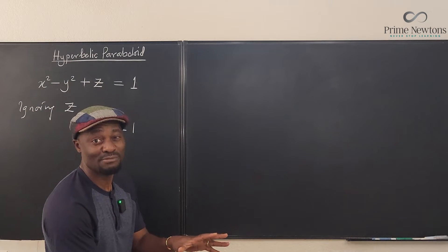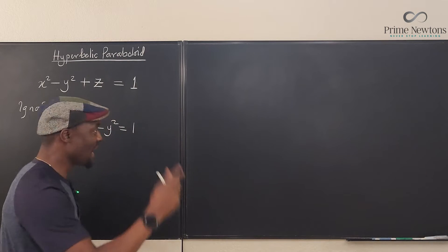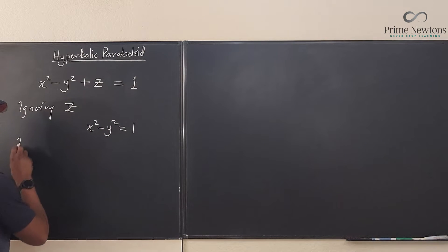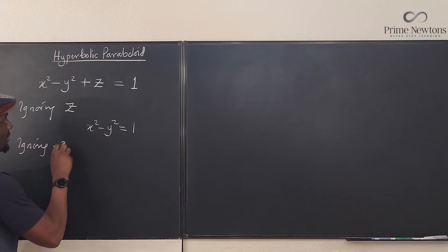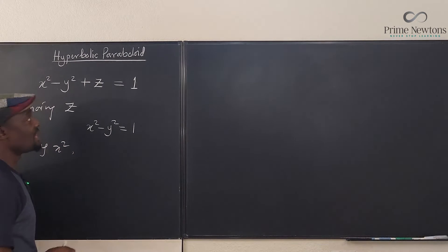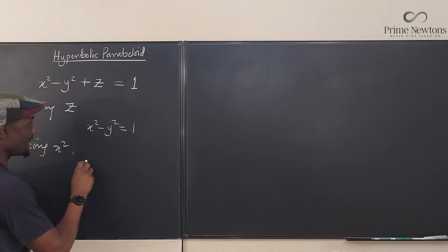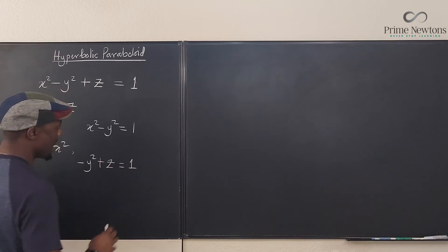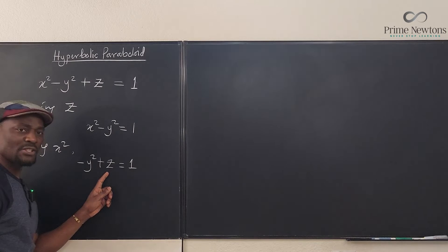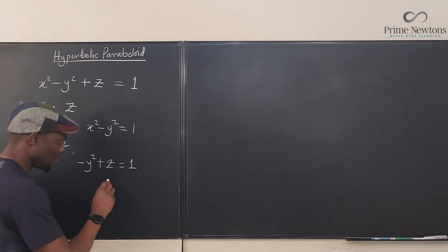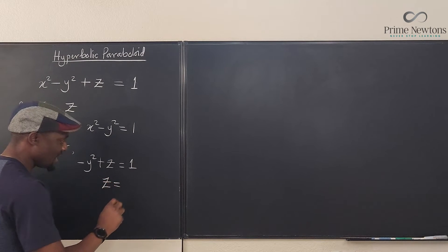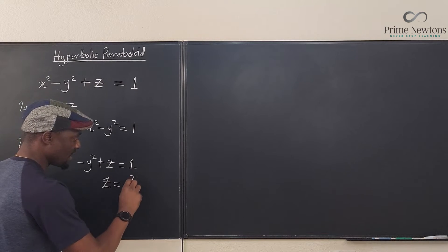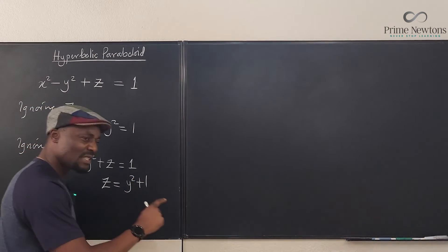So that's the first one. Now let's ignore something else. Ignoring x squared, what would you get? If you ignore x squared, you're going to get negative y squared plus z equals one. What if we isolate z and move this over here? You're going to end up with z is equal to y squared plus one. Now have you seen this before?